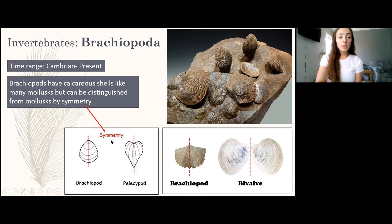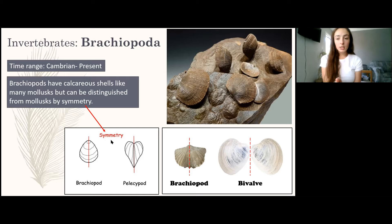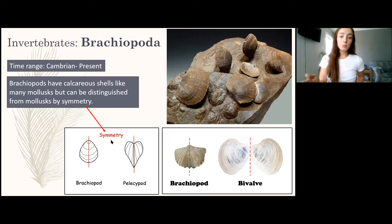The next phylum is Brachiopoda. Brachiopods are somewhat similar to bivalves but have different symmetries. To tell them apart, look at the symmetry: brachiopods are symmetrical along the top middle of their shell but not between their two shells, since one shell is typically smaller. Bivalves are symmetrical going between their two shells but not along the top, since they curve near the hinge.